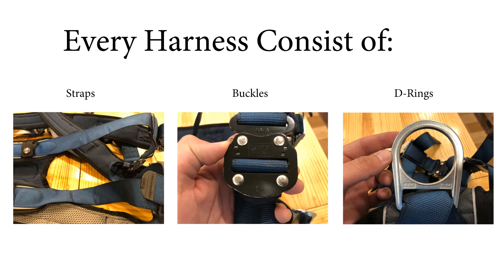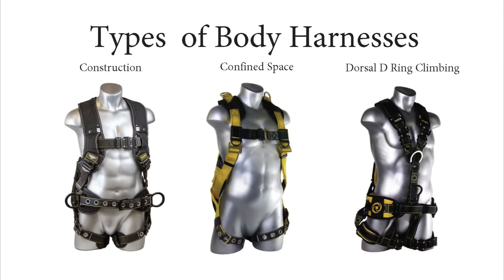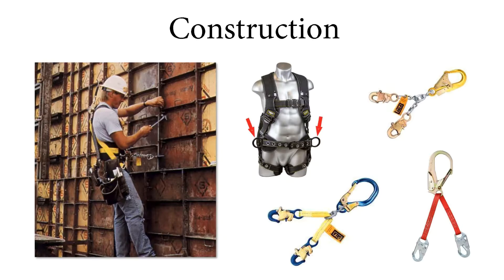It's important to stress that OSHA requires users to inspect their harness before each use. There are three main types of body harnesses: construction, confined space, and climbing. A construction harness usually comes with side D-rings that are made for positioning. As you can see here, the worker is able to work hands-free while using a positioning lanyard. Positioning lanyards are not to be used as fall arrest — the only D-ring on your harness that can be used for fall arrest is your back dorsal D-ring. As you can see in this picture, the worker is attached to another anchor using his dorsal D-ring.